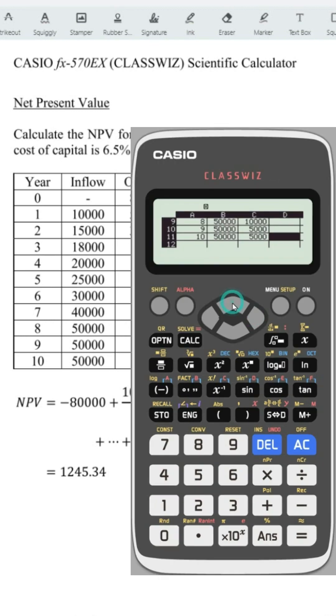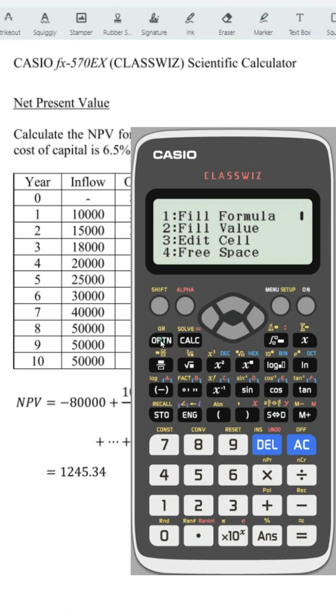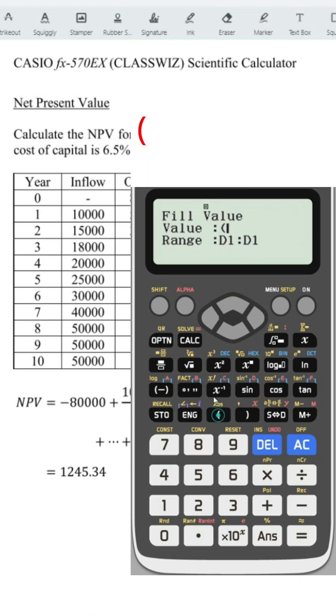Then go to column D and back to the first row. Select Fill Value and make a bracket.